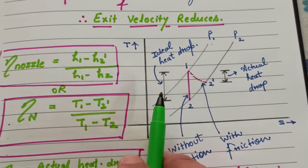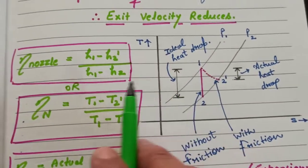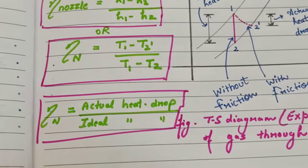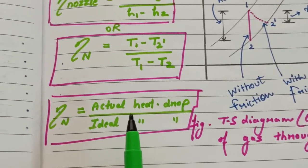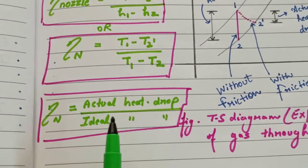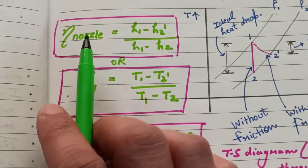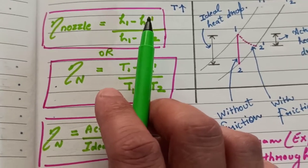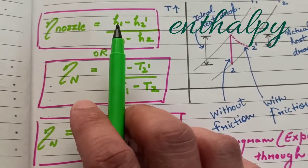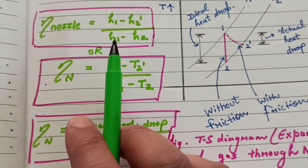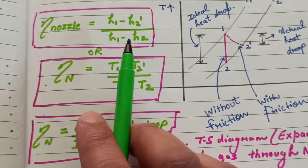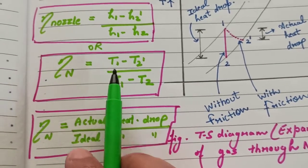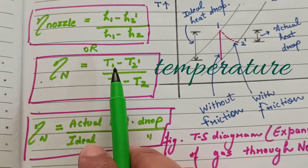Now if we see the nozzle efficiency, the nozzle efficiency is actual heat drop upon ideal heat drop. The actual heat drop is h1 minus h2 dash, where h is enthalpy of the gas, and the ideal is h1 minus h2. Or you can write it with respect to temperature also: T1 minus T2 dash upon T1 minus T2.